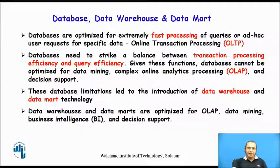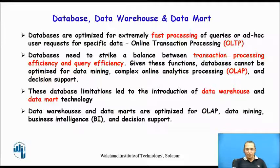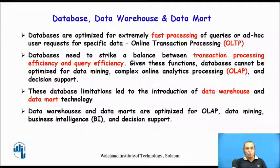Databases are optimized for extremely fast processing of queries or ad hoc user requests for specific data. This kind of data processing is called online transaction processing, or OLTP, which consists of updating certain data as and when transactions happen. Whenever there are transactions inside an organization, those must be captured and reflected into the database. All such software systems are called OLTP or online transaction processing systems. Databases are basically designed to support this OLTP.